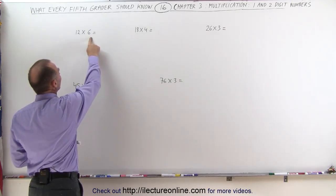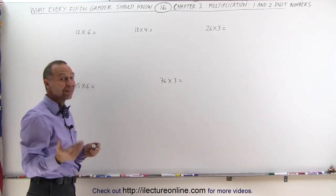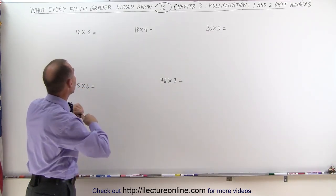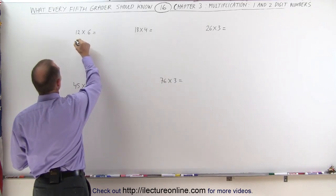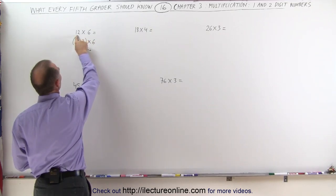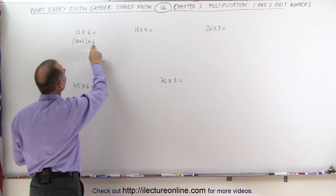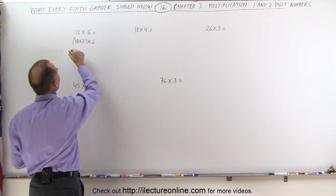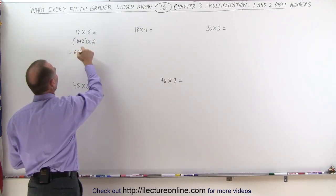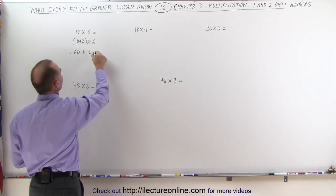Here we're multiplying 12 times 6. Notice that the unit number here, the 2, is a very small number. When it's like this, I recommend that you look at it as 10 plus 2 times 6. We break the number out between the 10 and the 2. We multiply 6 times 10, we get 60. And 2 times 6 equals 12. 60 plus 12 equals 72.